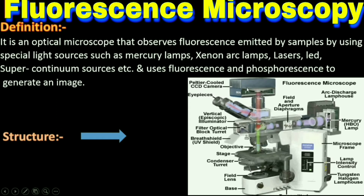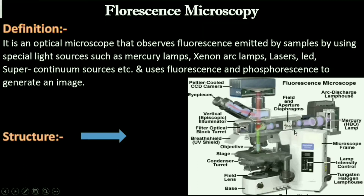The main components of this microscopic technique are: first, the light source; second, the excitation filter — also called the first optical filter; third, the dichroic mirror or beam splitter; fourth, the objective lens; fifth, the emission filter; and last, the detector, which detects the image using CCD cameras. Other parts are the same as the compound microscope; the main difference is in the light source.